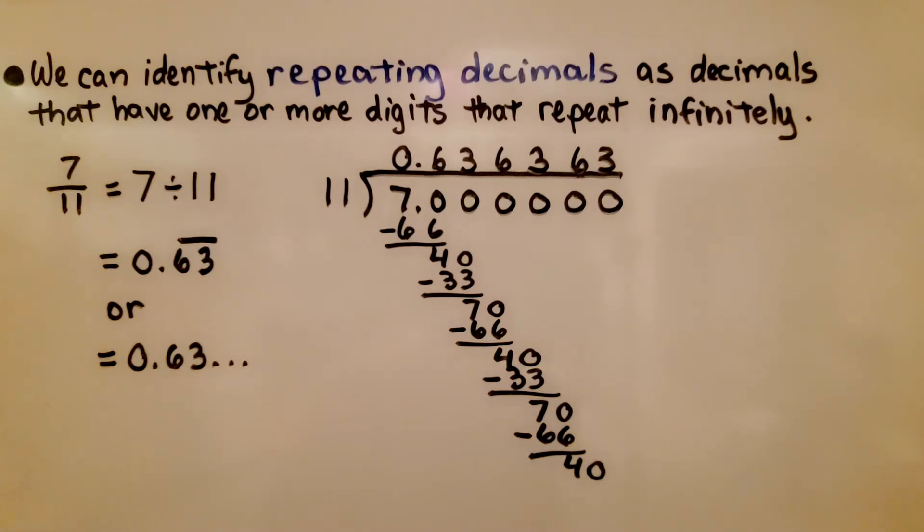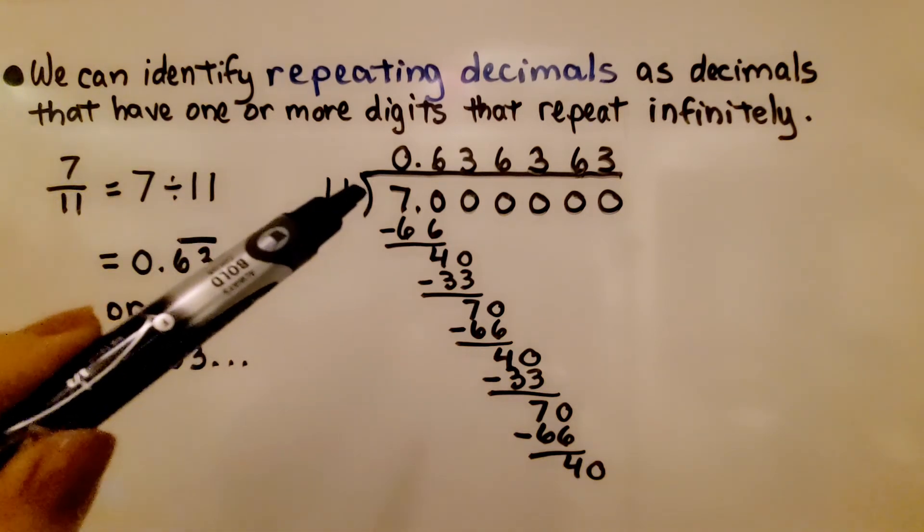We can identify repeating decimals as decimals that have one or more digits that repeat infinitely. For 7/11, we're going to do 7 divided by 11.